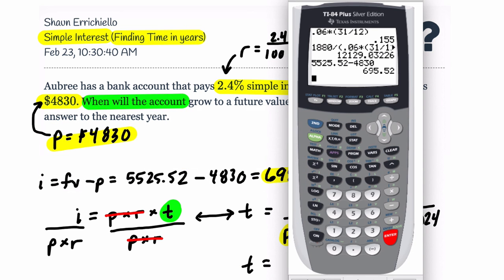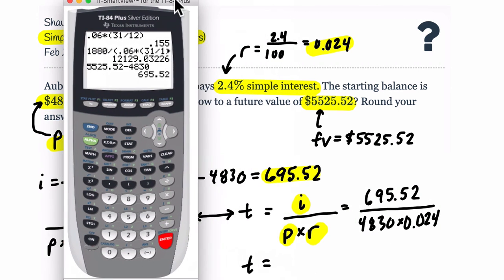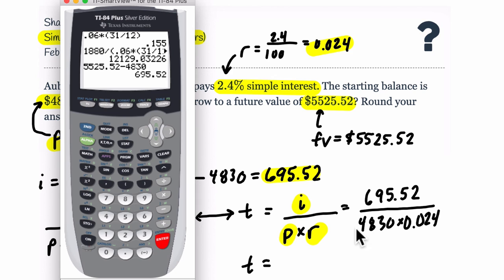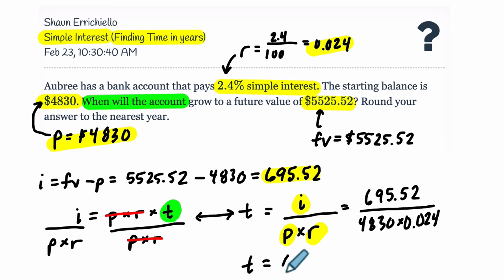Now when you calculate something like this, just be careful. You've got a product in your denominator. You want to put that in parentheses. So 695.52, and we're dividing it by the product, the multiplication of, there's my parentheses, 4,830 times 0.024, close parentheses, enter. So 6. So 6 years. So it'll take 6 years for this amount to reach this amount.